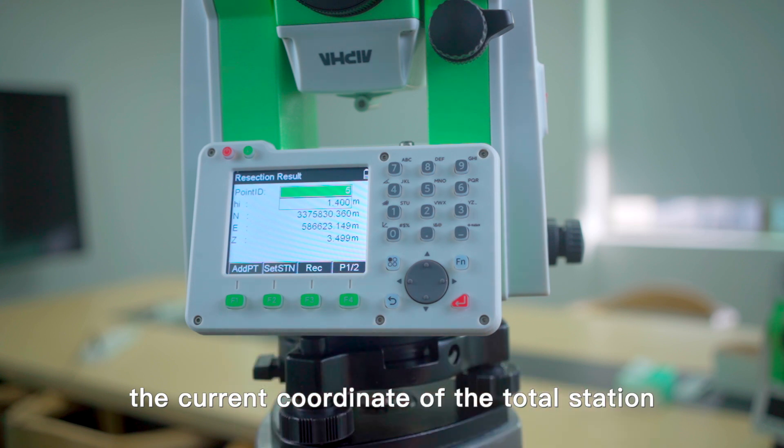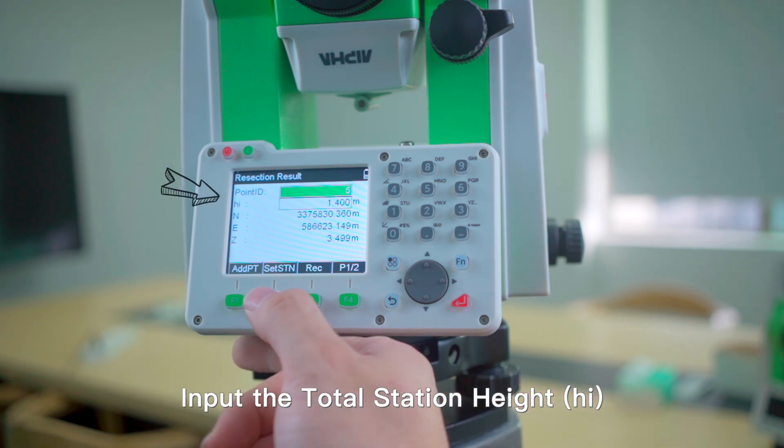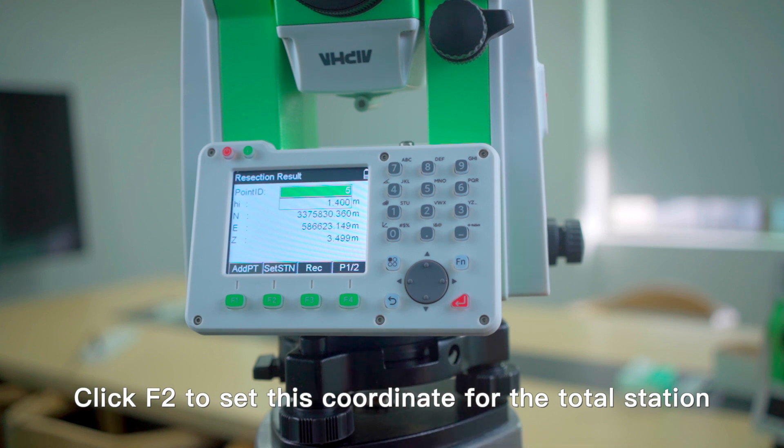The current coordinate of the total station. Input the total station height. Click F2 to set this coordinate for the total station.